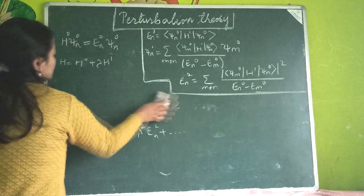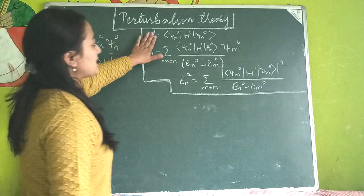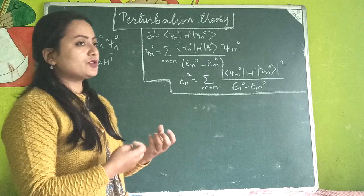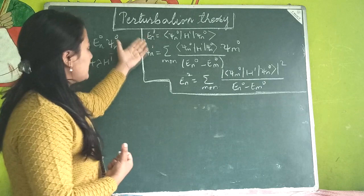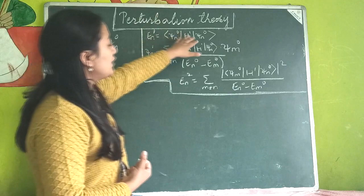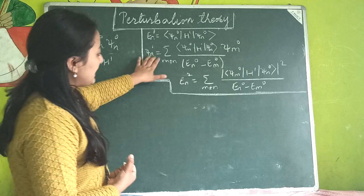If a question asks me to find the first-order correction to the energy eigenvalue given a modified Hamiltonian, I use the formula to find the expectation value and get the result. Similarly for ψ_n¹ and E_n².